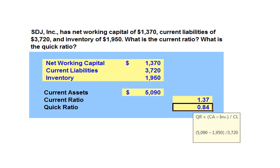Finally, the quick ratio. The quick ratio is calculated as current assets minus inventory, that quantity, divided by current liabilities. Thus, the quick ratio is $5,090 minus $1,950 in inventory, divided by current liabilities of $3,720.